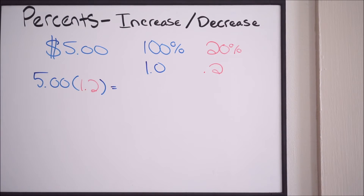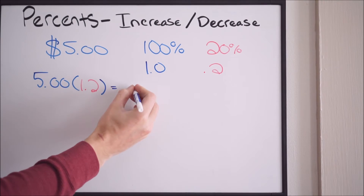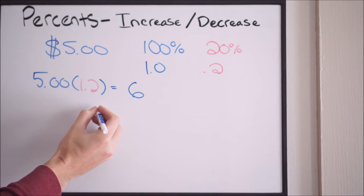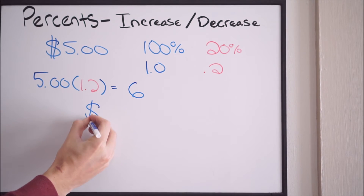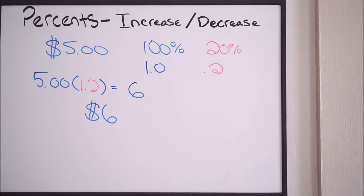Using your calculator, if you do 5 times 1.2, you're going to see that you get 6. So your new price is going to be $6 — that's with a 20% increase or 20% markup. Now you can do this for a decrease as well.